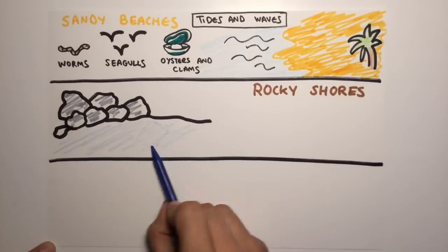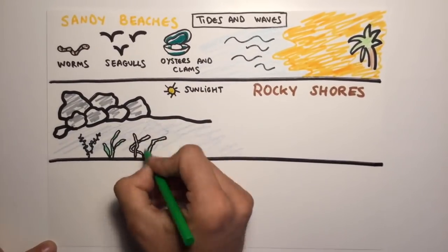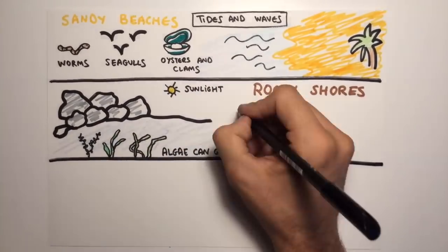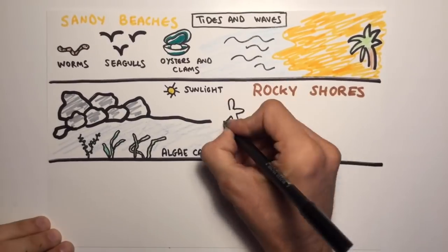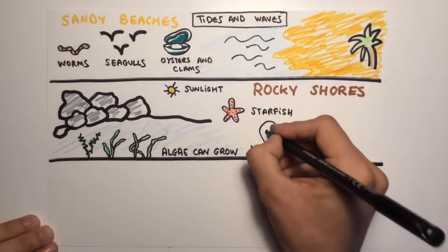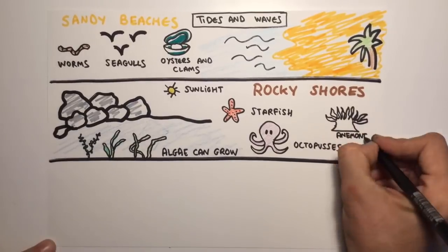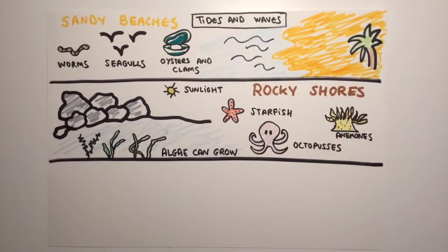Other marine ecosystems are the rocky shores. These are shallow areas with sunlight, which allows algae to grow. Rocky shores are the home to starfish, octopuses, sea anemones, and moray eels.